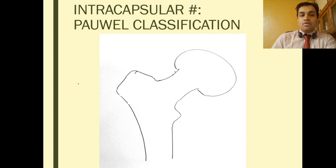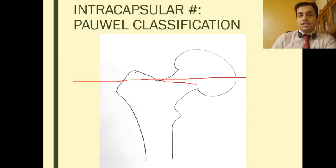We have two more classifications based on the angle of the fracture line. First is the Pauwels classification, referring to the angle of the fracture line with respect to the horizontal: Pauwels A is around 30 degrees, Pauwels B around 50 degrees, and Pauwels C around 70 degrees from the horizontal.